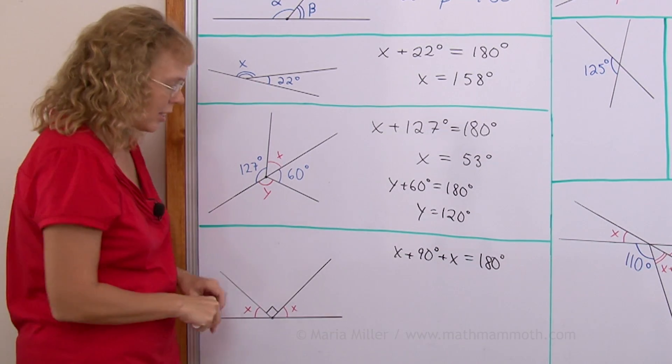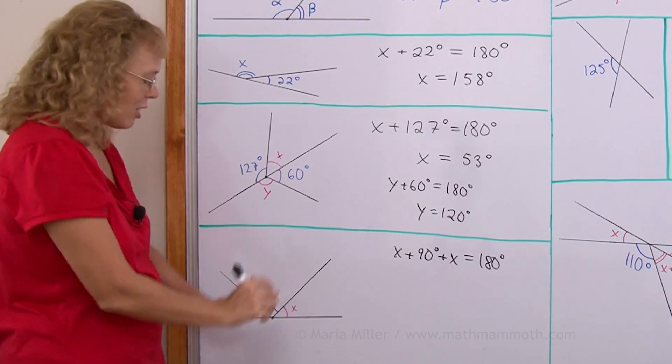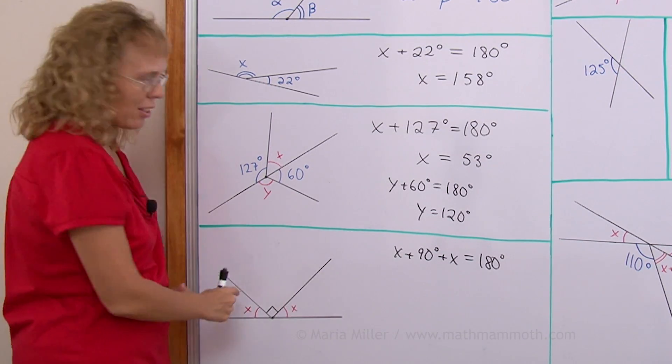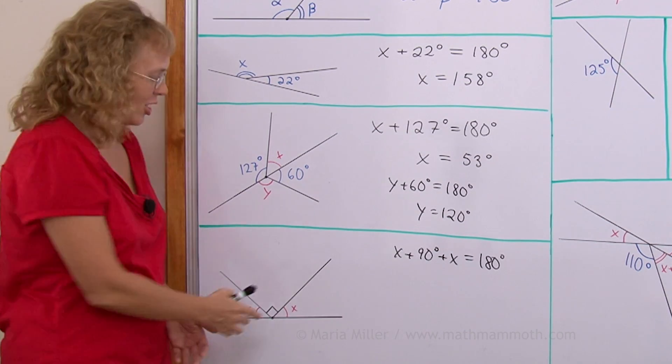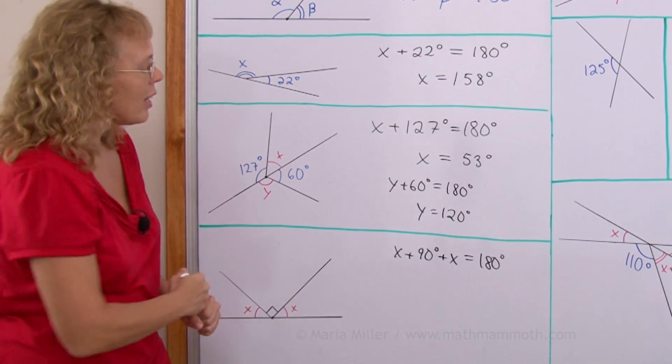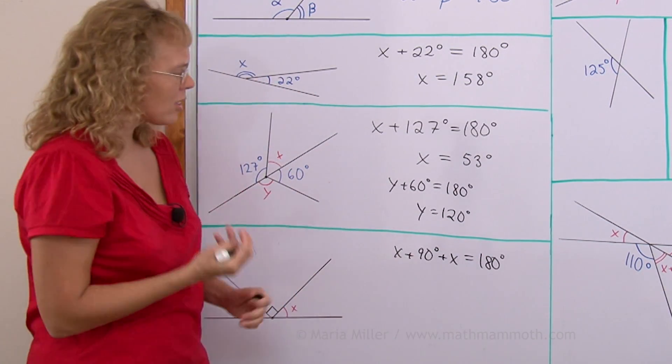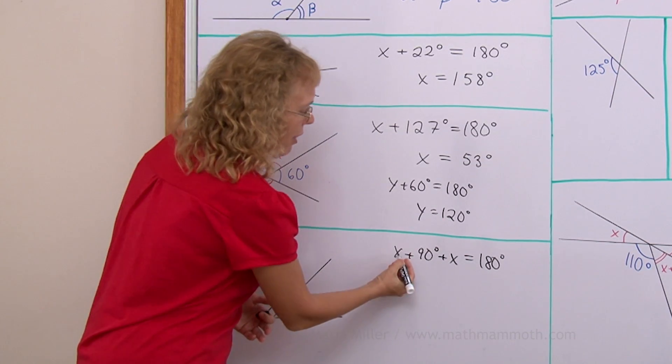And solving an equation. You can probably solve this. It is very easy to solve this without using an equation because X and X together have to be 90 degrees. So X is half of 90, right? But when we solve an equation let's also practice this. We have X and X. Adding those together we have 2X.